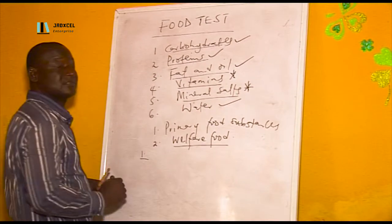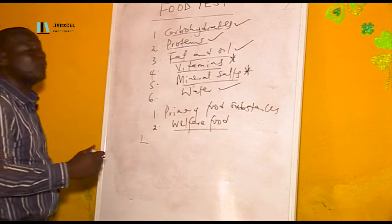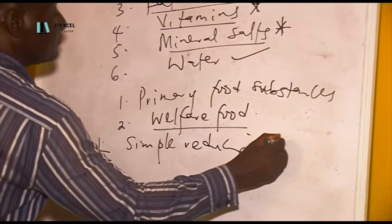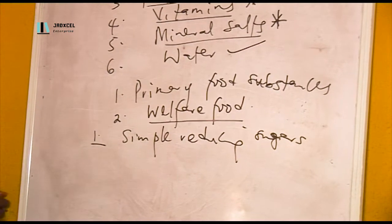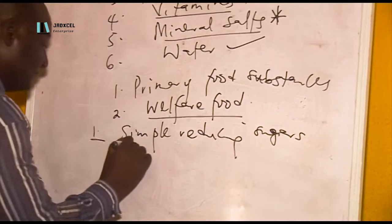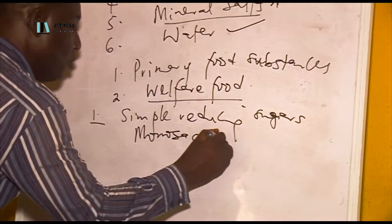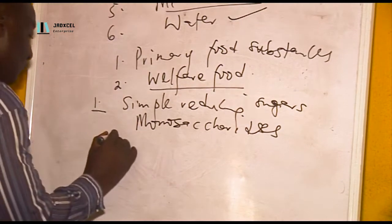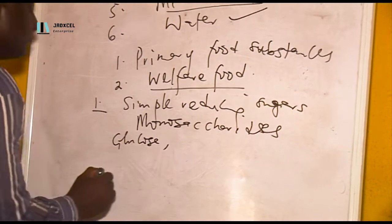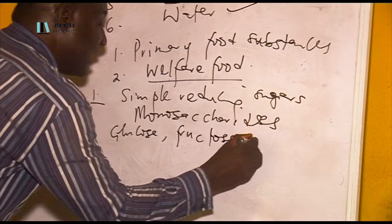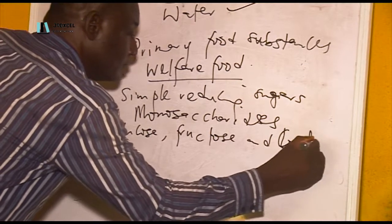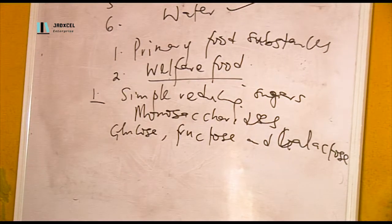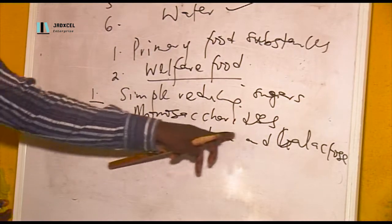When you look at carbohydrates, there are three classes. One: simple sugars, also known as monosaccharides. These are glucose, fructose, and galactose. We call them simple reducing sugars. So when they are talking about simple reducing sugars, they are talking about glucose, fructose, and galactose.